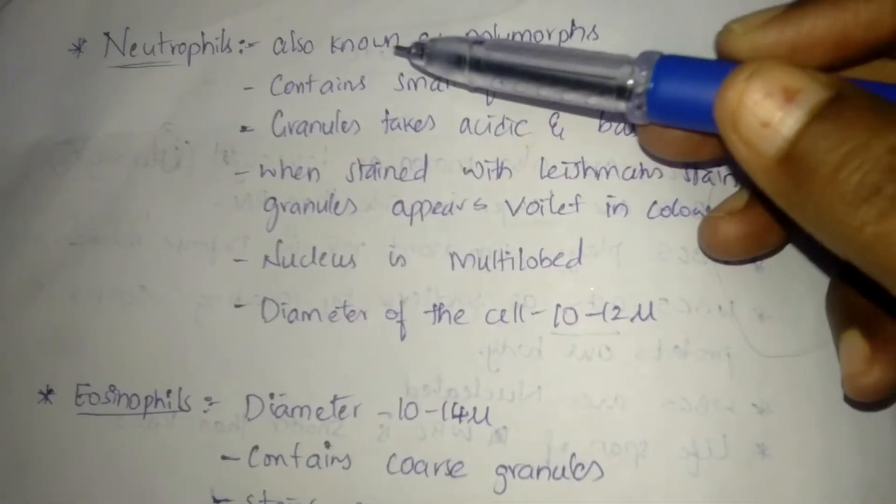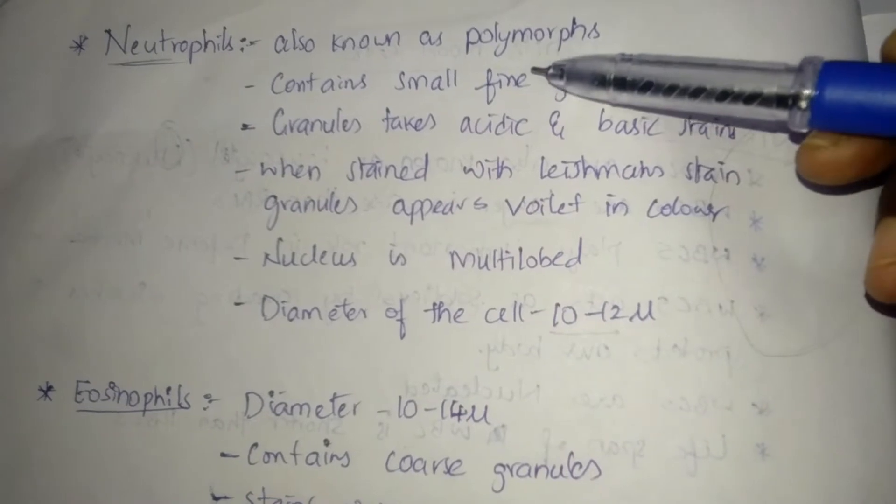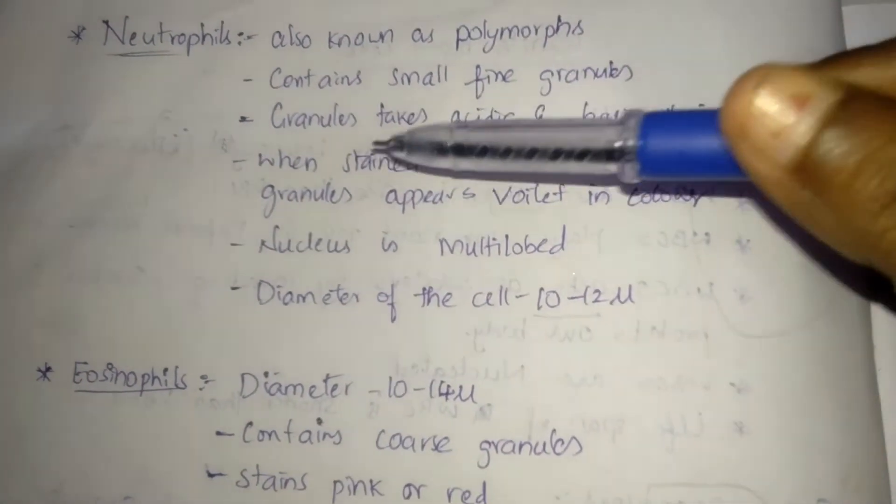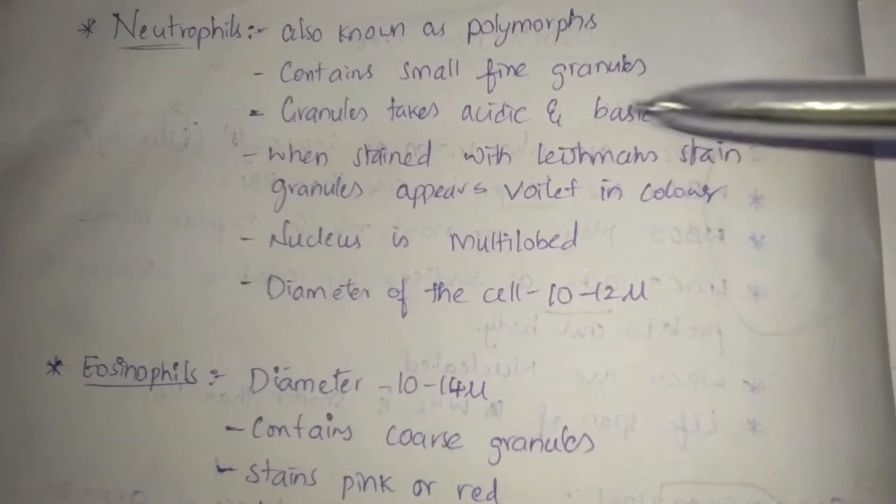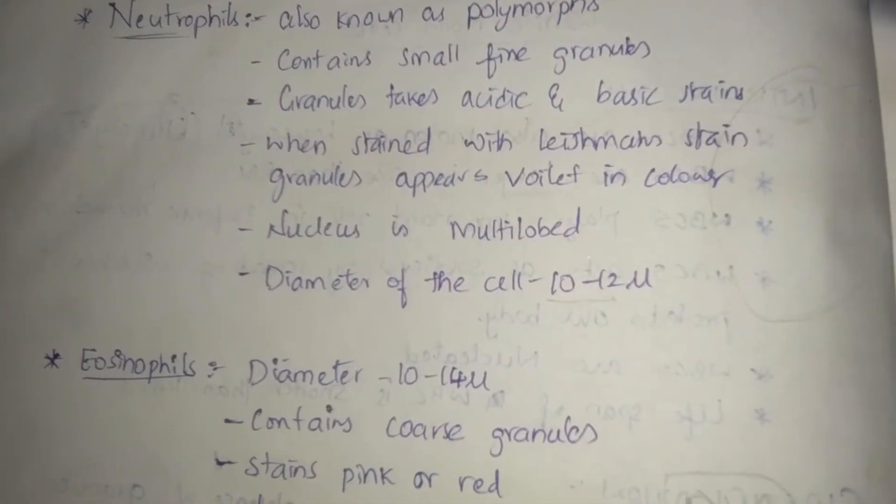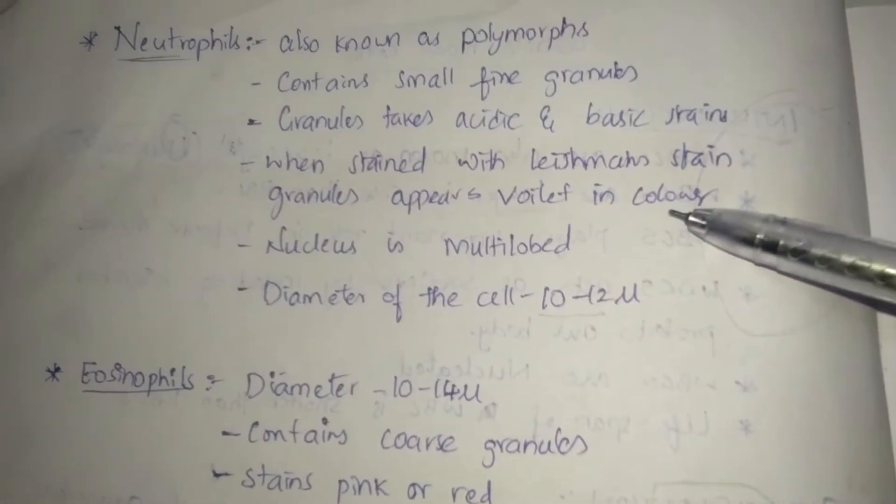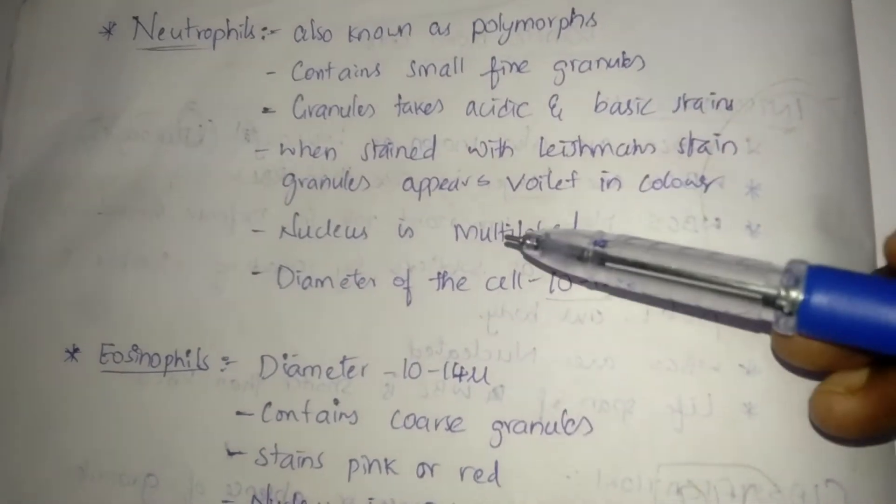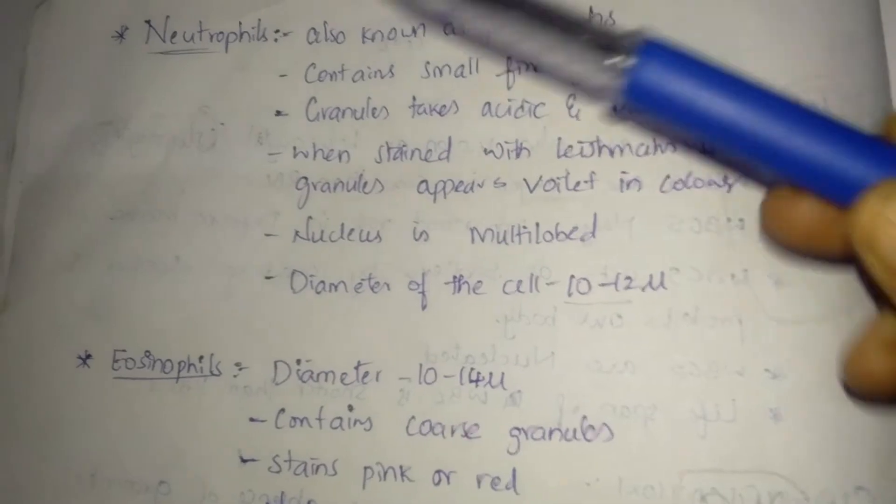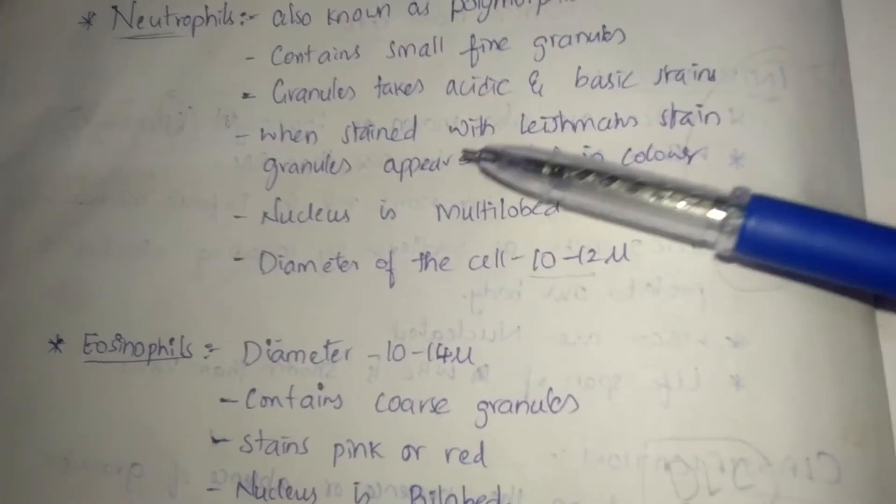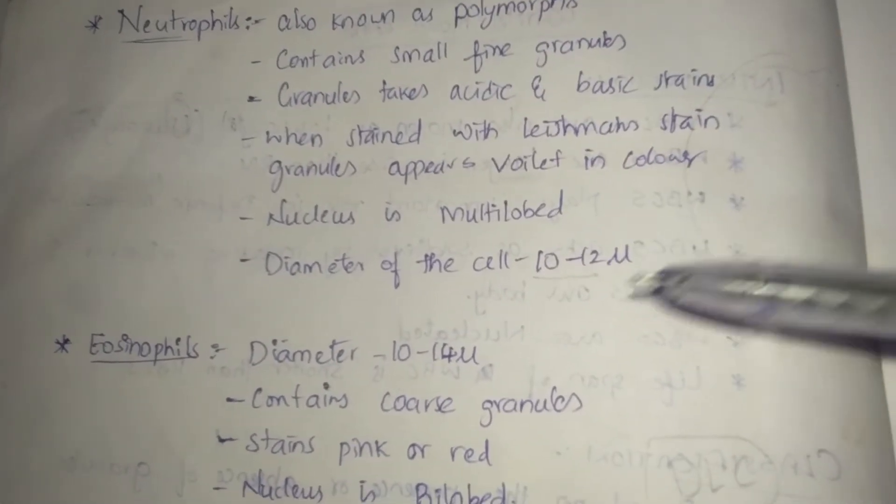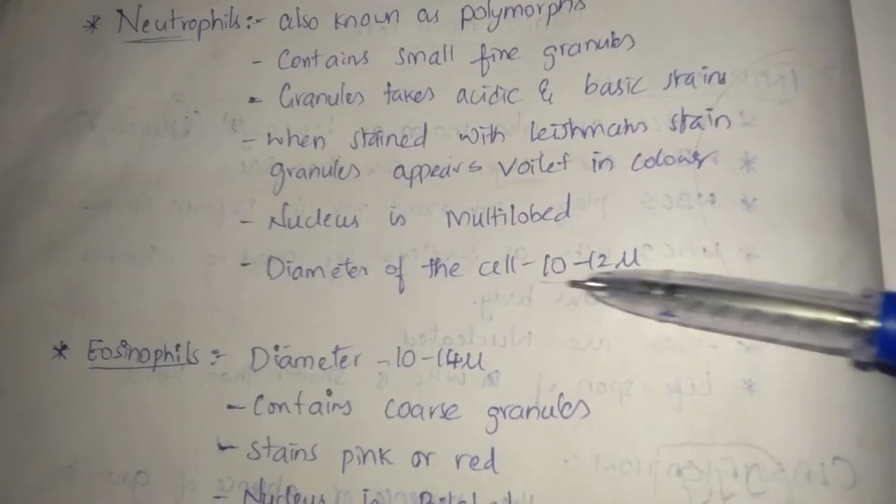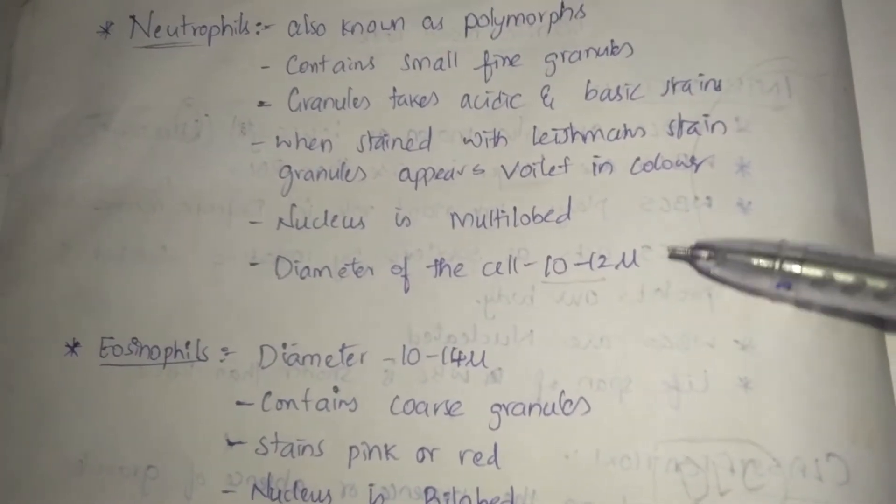Neutrophils: Neutrophils also known as polymorphs. Contains small fine granules. Granules take acidic and basic stain. When stained with Leishman stain, granules appear violet in color because both acidic and basic stains are taken, that's why it's called neutrophils. Nucleus is multi-lobed. Diameter of the cell 10 to 12 micrometers.